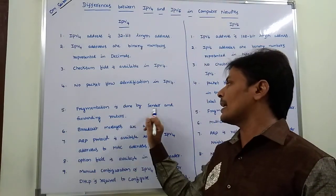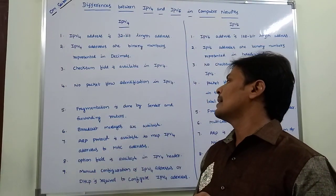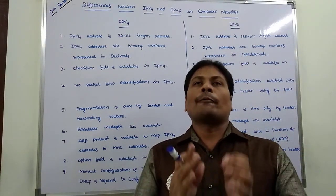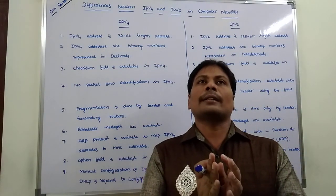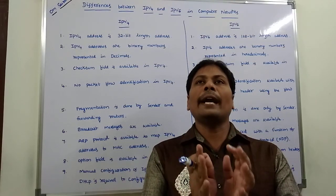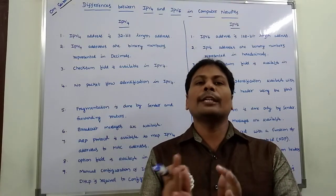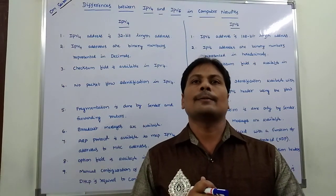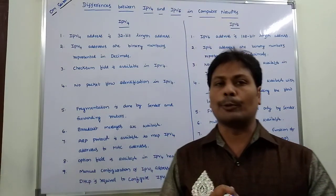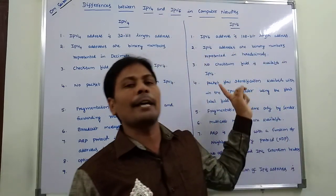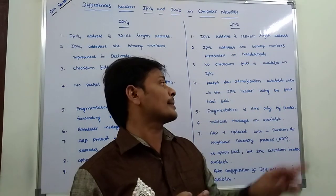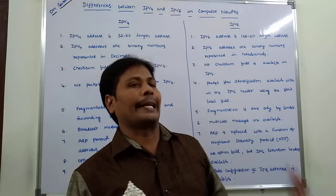Fifth point: fragmentation — which means dividing a message into a number of packets — is done by the sender and forwarding routers in IPv4. But in the case of IPv6, fragmentation is done only by the sender.